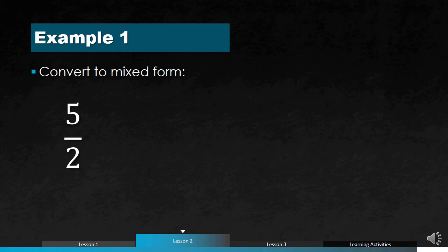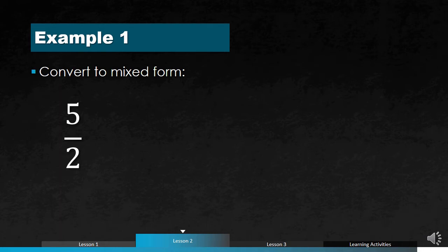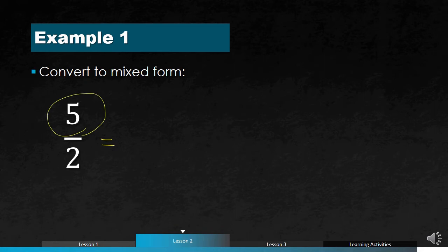Now let's consider conversions. What we have here is an improper fraction — we say it is improper because the numerator is greater than the denominator. We will convert it into a mixed form, meaning we will have one whole number and one proper fraction. To do that, we divide the numerator 5 by the denominator 2.